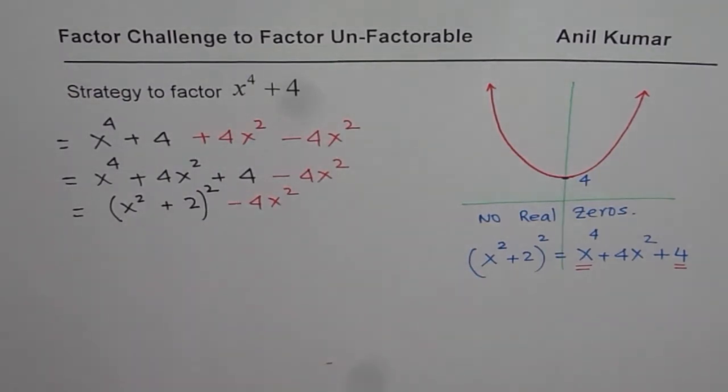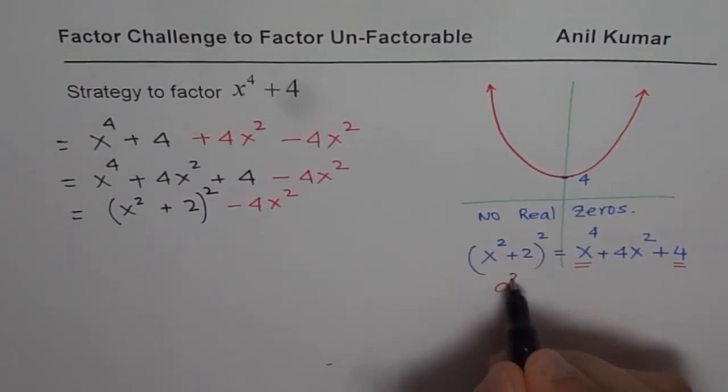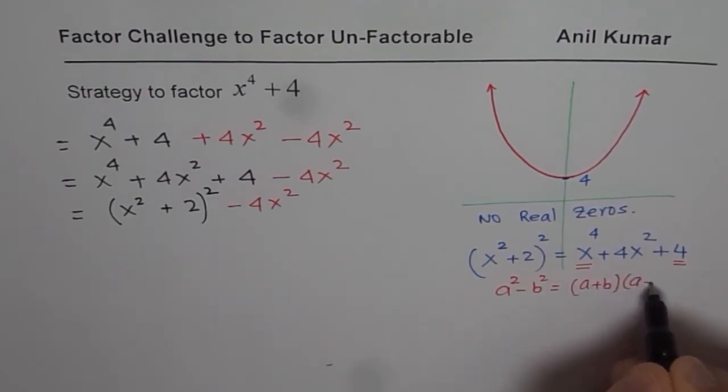At this stage, we can apply difference of squares. I hope you remember, difference of squares is a square minus b square is equal to a plus b times a minus b.